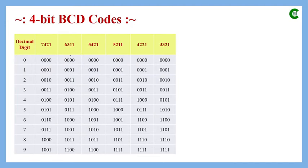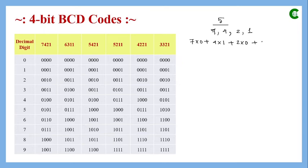There are other 4-bit BCD weight formats besides 8-4-2-1. In the 7-4-2-1 format, to represent decimal 5, we use 4 + 1 = 5, giving the combination 0101: 7×0 + 4×1 + 2×0 + 1×1 = 5.